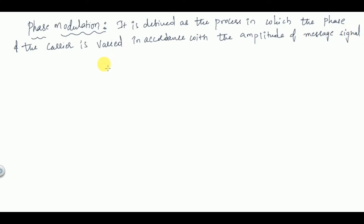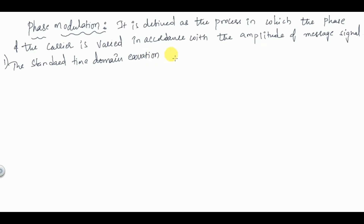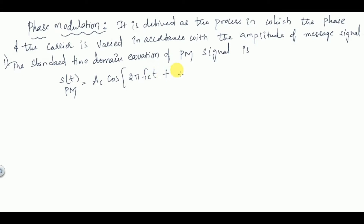Phase modulation is not that much important by itself, but the relationship between phase modulation and frequency modulation is important, so we have to discuss some important points. The standard time-domain equation of PM — that is, the phase modulated signal — is: s(t) of PM = Ac · cos(2π·fc·t + kp·m(t)).